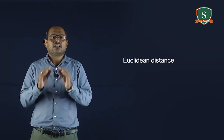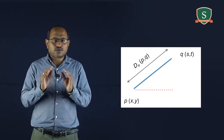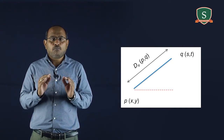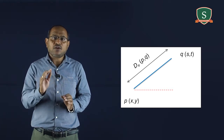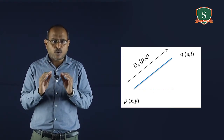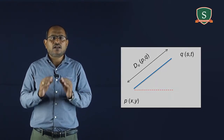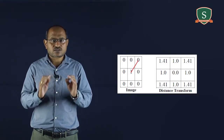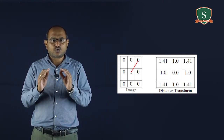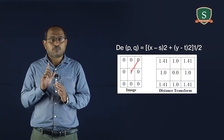Euclidean distance is the straight line distance between two pixels. It is the distance between two points in Euclidean space. The two points p and q in two-dimensional Euclidean space have coordinates x, y and s, t respectively. The line segment with endpoints p and q forms the hypotenuse of a right-angled triangle. The distance is defined as the square root of the sum of squares of differences between corresponding coordinates: d_E of p, q equals root of (x minus s) squared plus (y minus t) squared.